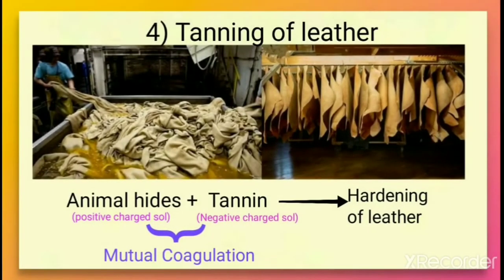The next application is the tanning of leather. Leather is made from animal hides, and animal hides are colloidal in nature with positively charged particles. When the hide is treated with tanning agents that carry opposite charges, mutual coagulation takes place, resulting in the hardening of leather. This process is called tanning.